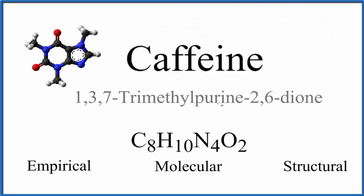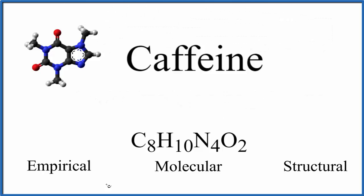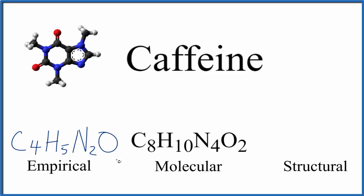Let's look at the empirical formula. The empirical formula is just the lowest ratio of atoms in the molecule. The lowest common factor here is 2, so if we divide everything by 2, we'd get C4H5N2O. That's the empirical formula for caffeine — it's just the lowest ratio derived from the molecular formula.